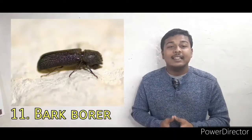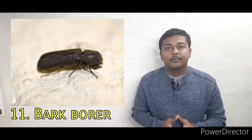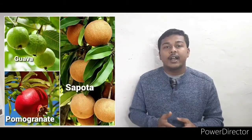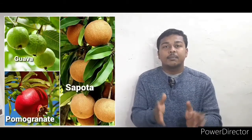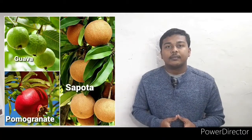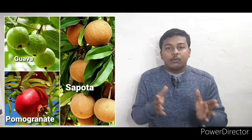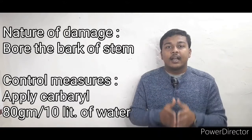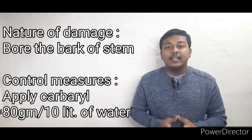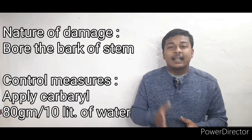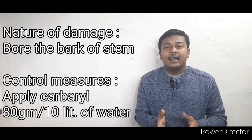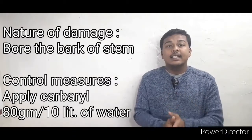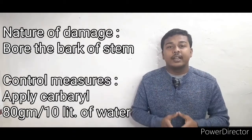The next pest is the bark borer. The affected crop plants are guava, pomegranate, and sapota. They bore into the bark of the stem. To control this, apply carbaryl at a ratio of 80 grams in 10 liters of water and spray.